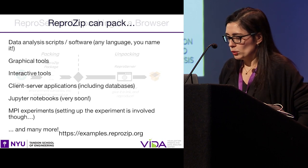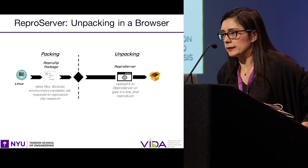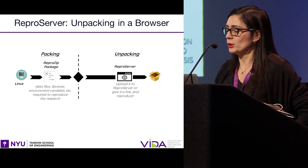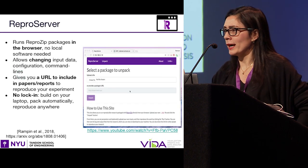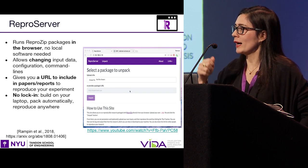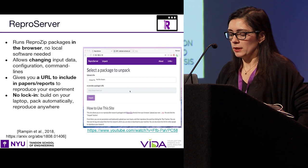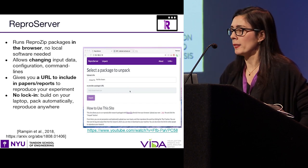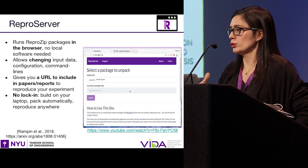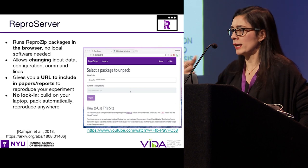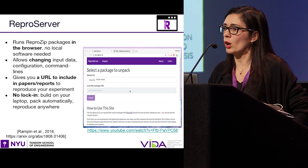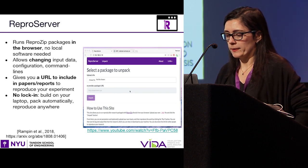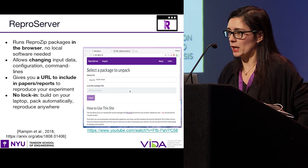Another tool that we developed is called ReproServer, which allows you to run any experiment packaged with ReproZip just using a browser. So if you've seen Binder, this is a similar idea, except now you can also capture state. The idea is that you can just point your browser to the RPZ package, and it will create the environment in your browser and allow you to modify parameters, input data, and rerun that on the fly. This whole infrastructure is set up so that you can deploy it on Amazon or Google Cloud, or in your own computational environment.